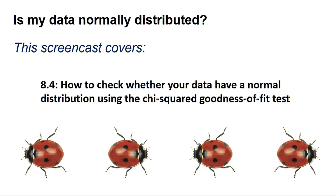If your data is normally distributed, then you can use a set of tests called parametric tests that are more powerful in discriminating significant from non-significant results. This is because the equation expects your data to conform to a pattern called the Gaussian or normal distribution, and so can make more accurate predictions. Researchers often like to do tests to determine if the data is normal, but please note that absolute justification that a small data set is normally distributed is almost impossible to do.